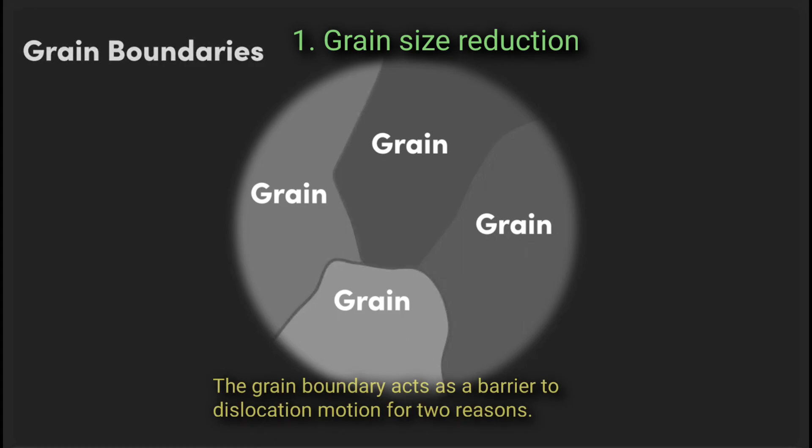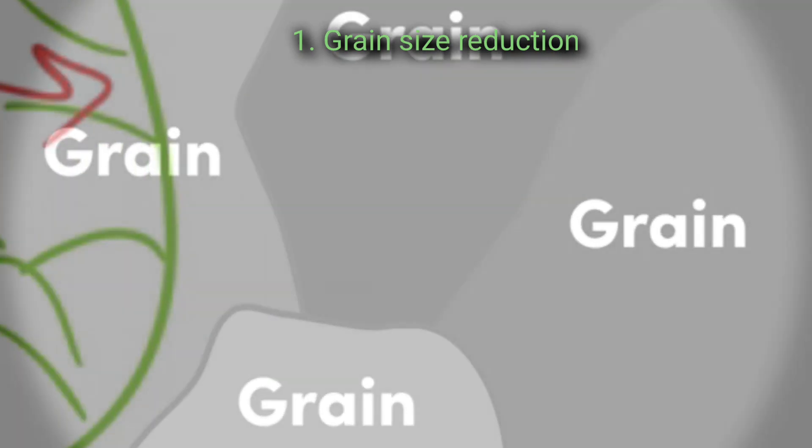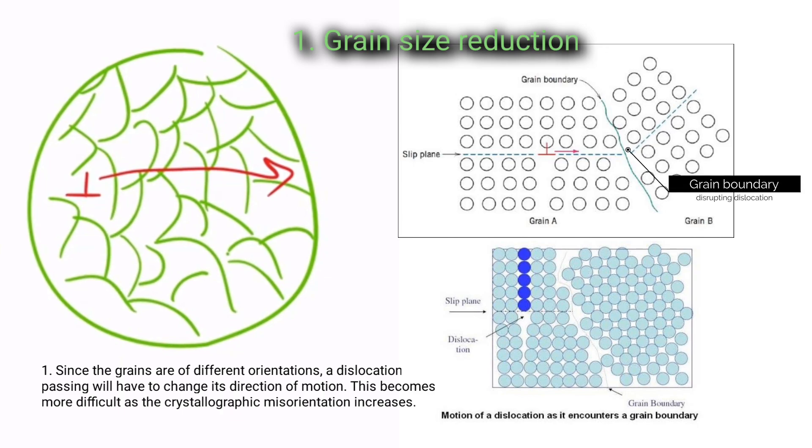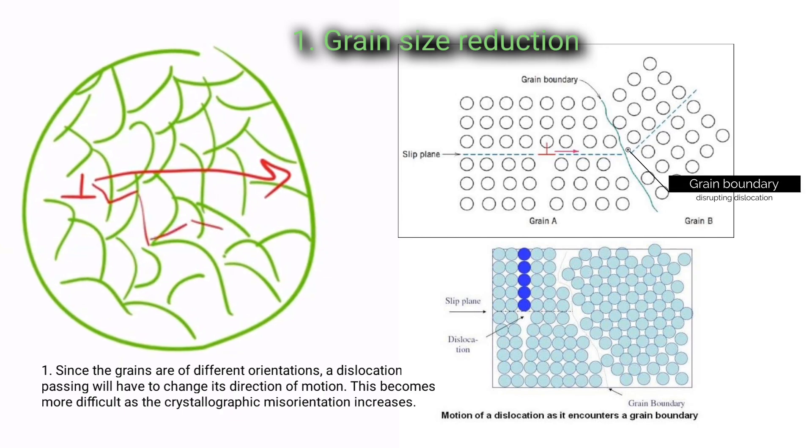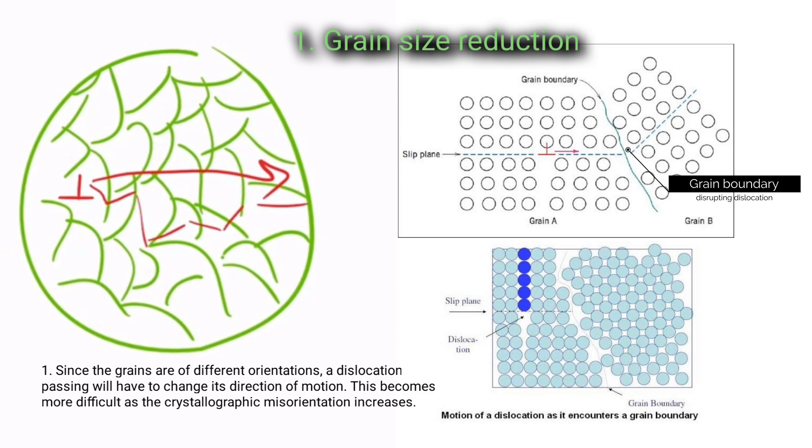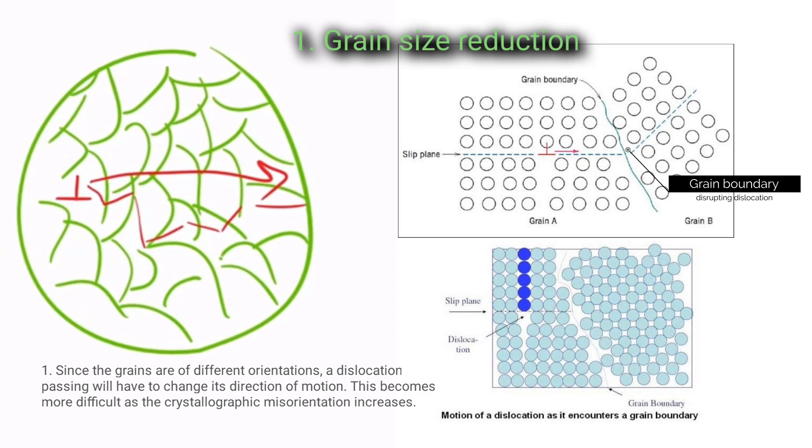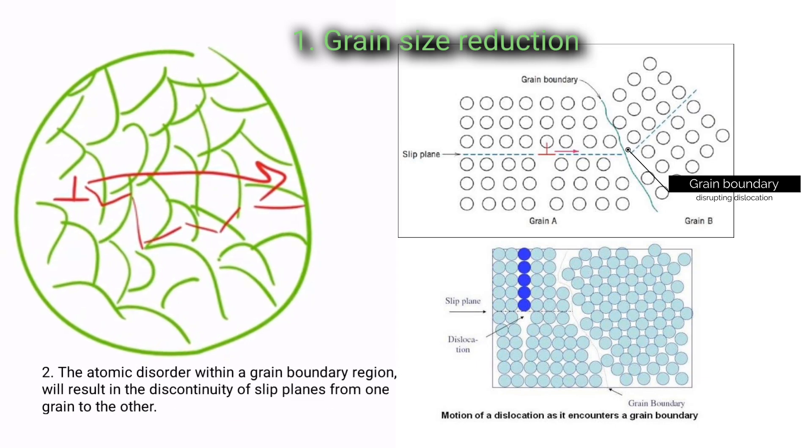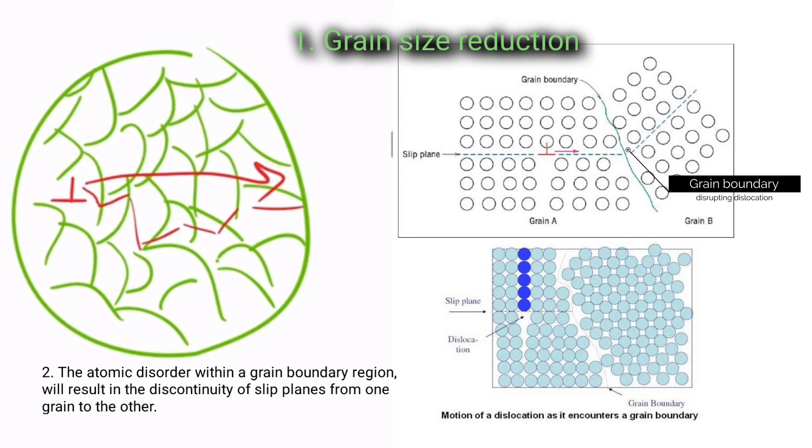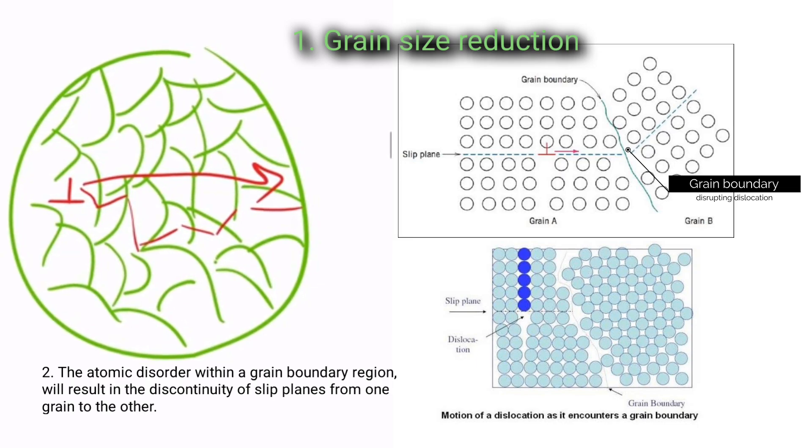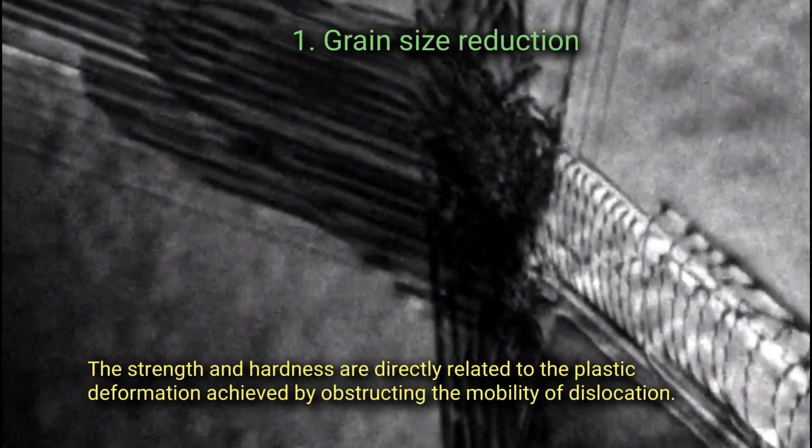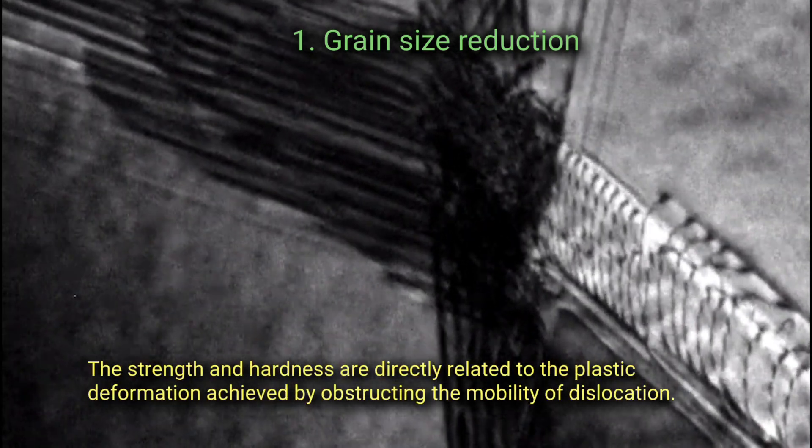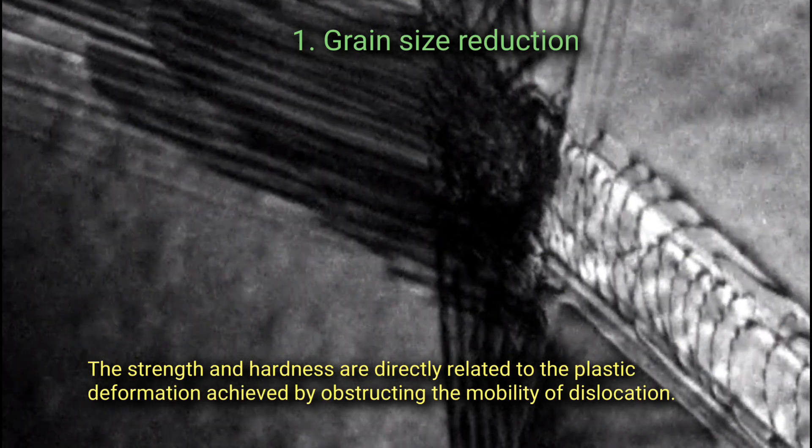The grain boundary acts as a barrier to dislocation motion for two reasons: One, since the grains are of different orientations, a dislocation passing will have to change its direction of motion. This becomes more difficult as the crystallographic mass orientation increases. Two, the atomic disorder within a grain boundary region will result in the discontinuity of slip planes from one grain to the other. The strength and hardness are directly related to the plastic deformation achieved by obstructing the mobility of dislocation.